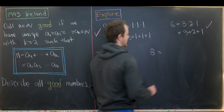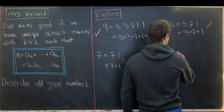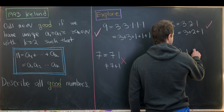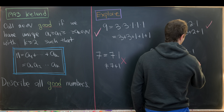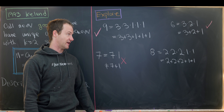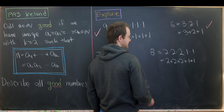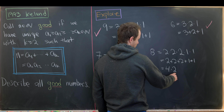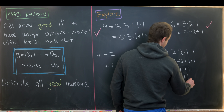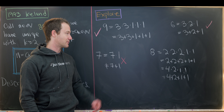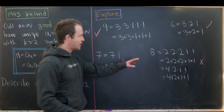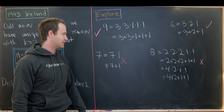Now look at 8. We have 2 × 2 × 2 = 8, but 2 + 2 + 2 = 6, so we need two extra ones: 2 × 2 × 2 × 1 × 1 = 2 + 2 + 2 + 1 + 1. But we can also combine the first two twos: 4 × 2 × 1 × 1 = 4 + 2 + 1 + 1 = 8. So 8 is not good due to the uniqueness criterion, not existence.